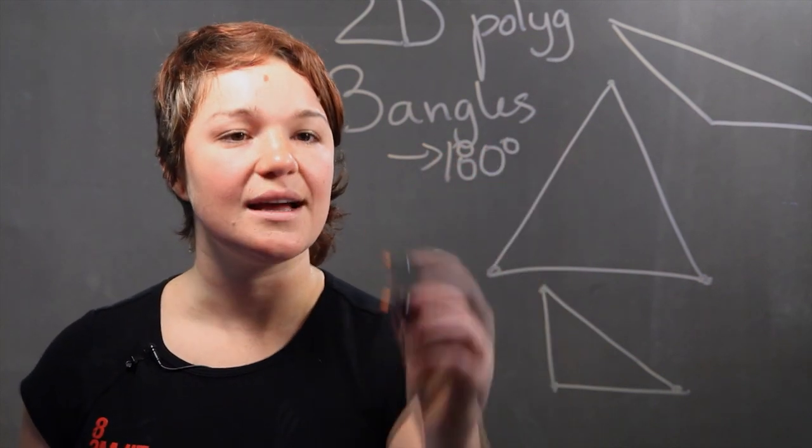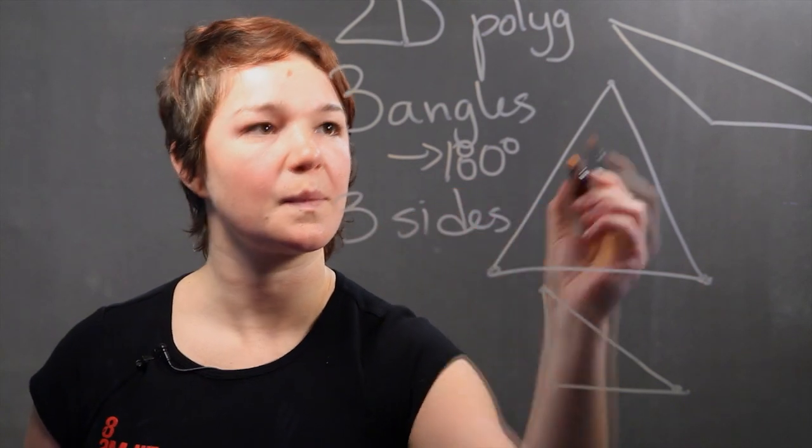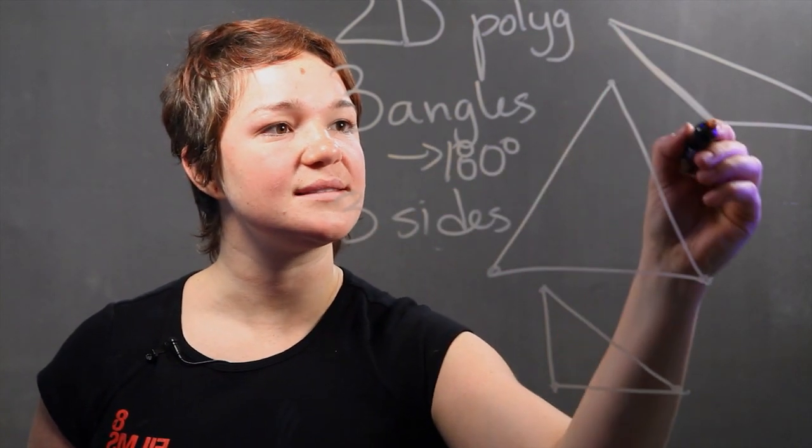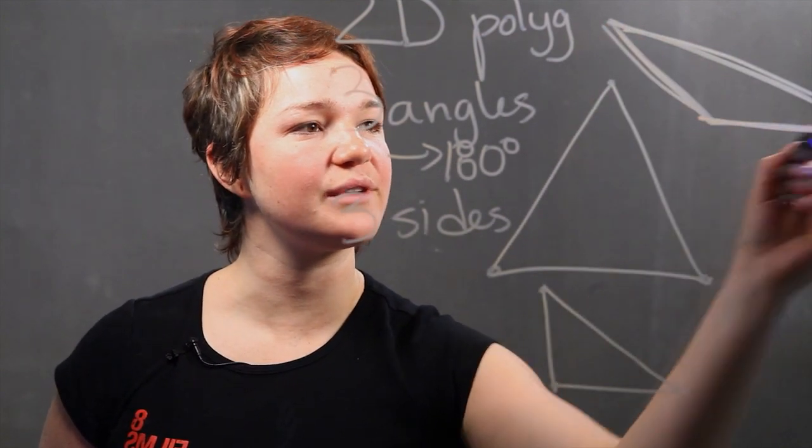And lastly, a triangle has three sides. So, we can see this is side one, this is side number two, and this is side number three.